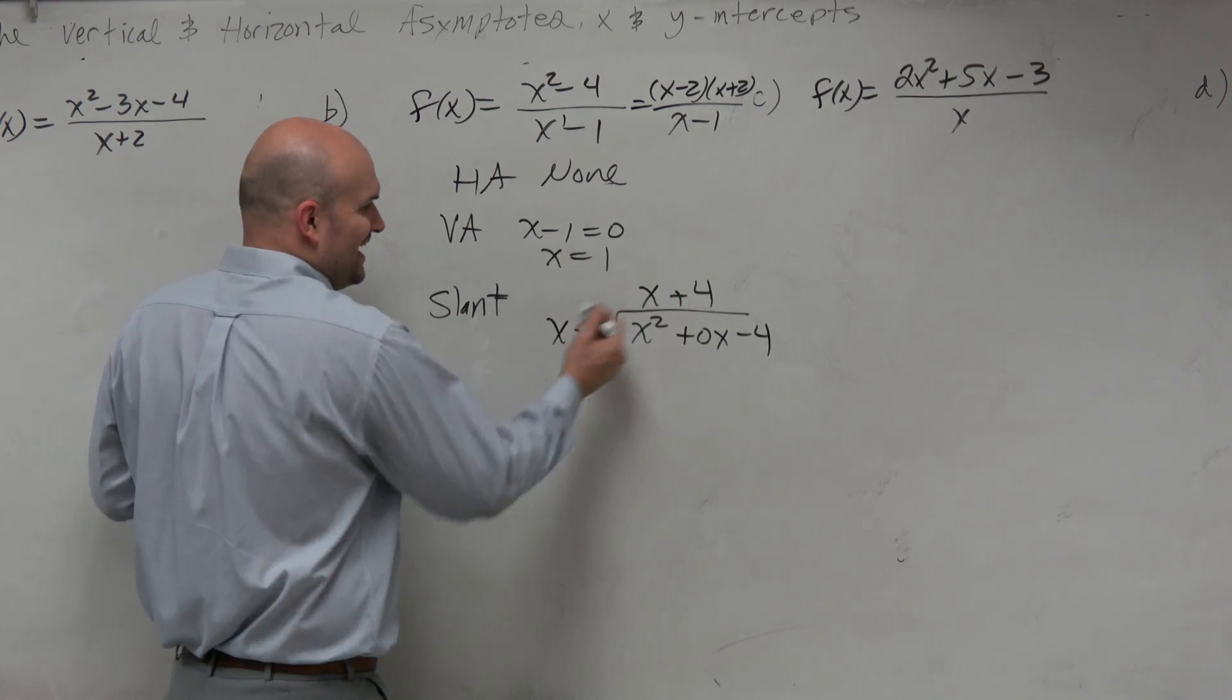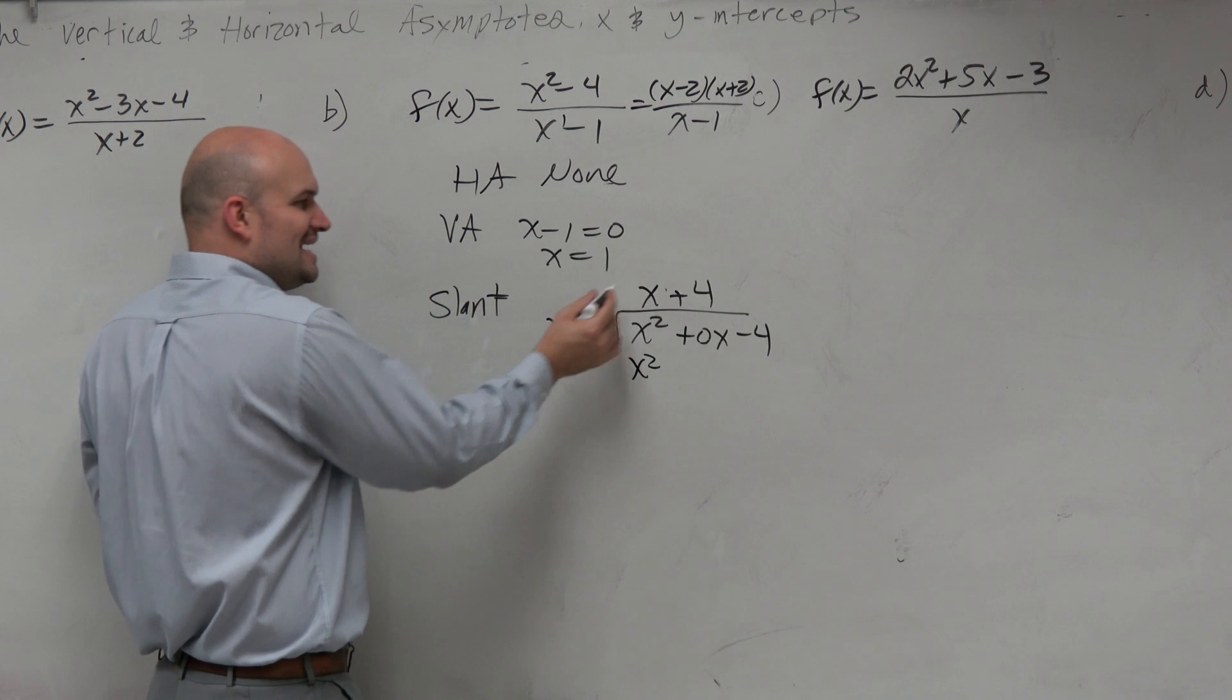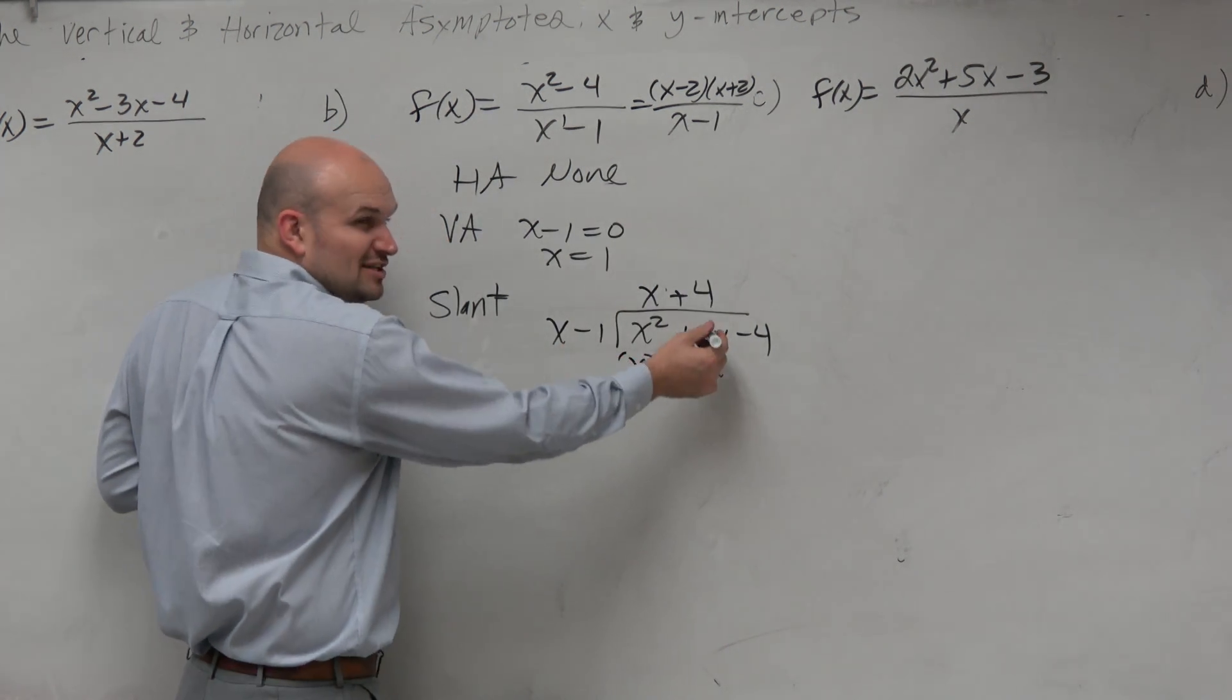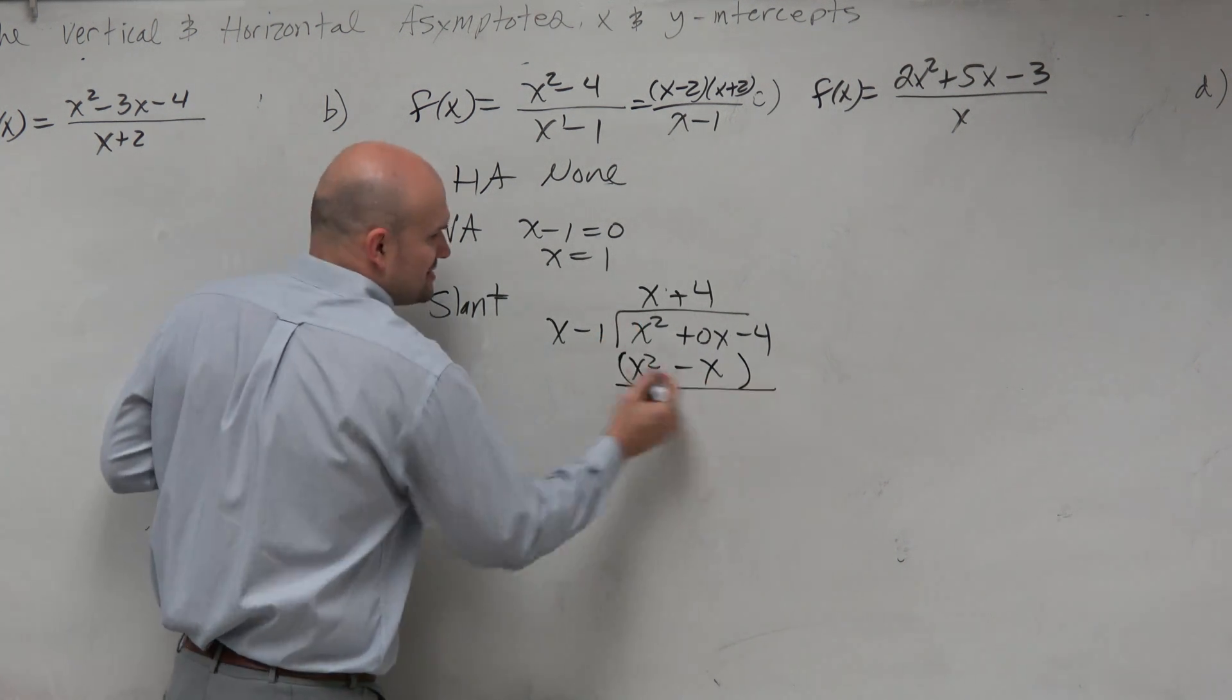All right, let's go back to the long division. x times x is x squared. x times negative 1 is a negative x, right? But still, it's nice to have that place value. All right, so now I subtract.